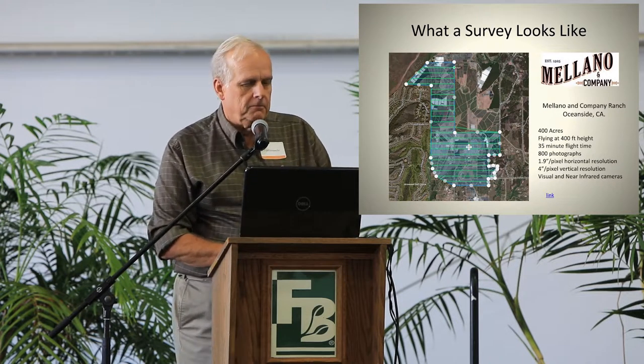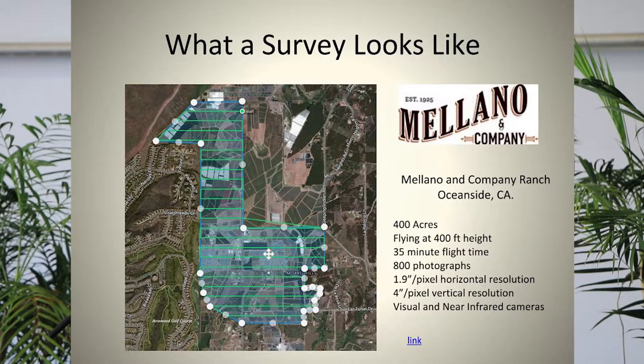A survey is done on Google Maps or an iPad. You tap the edges and the computer calculates the flight path — this green line is the path the drone takes. It comes back if it needs batteries. In this case it generates 860 images, overlapping so it can produce a two-dimensional map like Google Maps, or even a three-dimensional map like Google Earth.